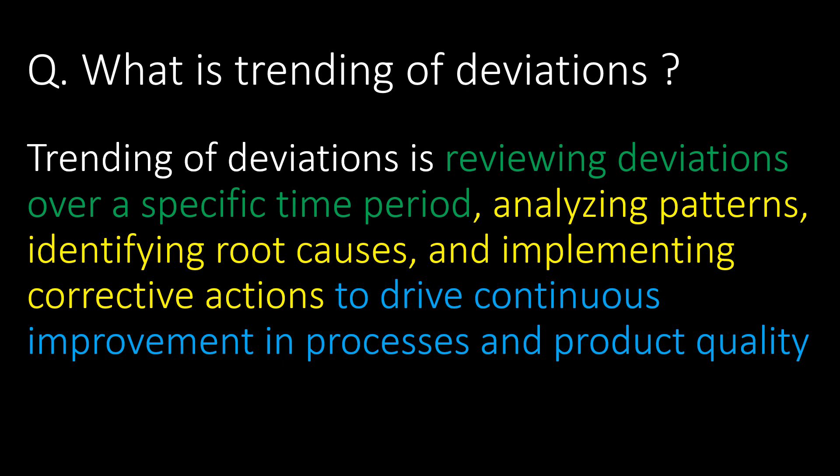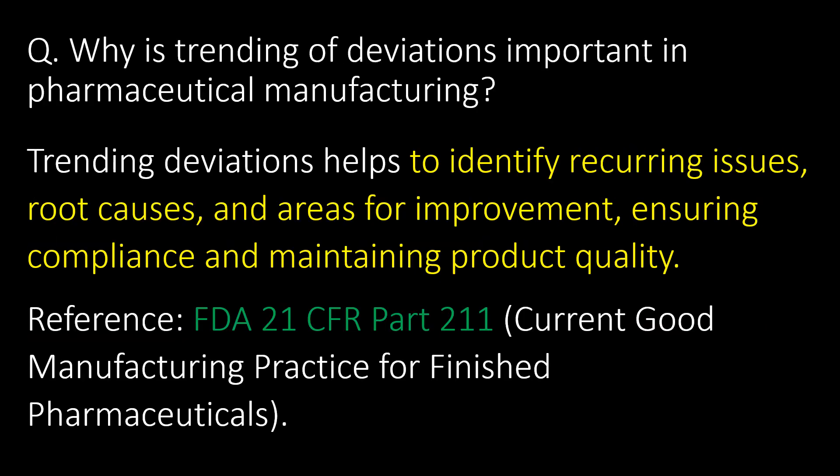In processes and product quality. Why is trending of deviations important in pharmaceutical manufacturing? Trending of deviations helps to identify recurring issues, root causes, and areas for improvement, ensuring compliance and maintaining product quality. Reference: FDA 21 CFR Part 211.